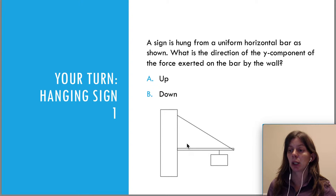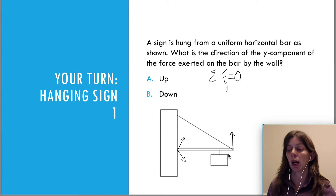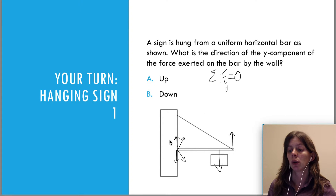Let's take a look at the same picture again. This time it asks: what is the direction of the y-component of the force exerted on the bar by the wall? We already established that the wall is going to push to the right on the bar, but it could push upward or downward. Looking at the condition that the sum of forces equals zero, we know the y-forces must balance. We know the tension has a force going up and the weight has a force going down on the bar, but we don't know if the tension is greater than the weight or vice versa. So we don't know if we need an extra component upward or downward for the y-forces to balance.